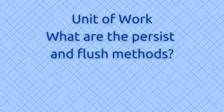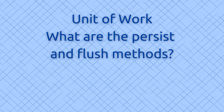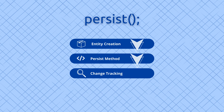Unit of Work and what are the persist and flush methods: Doctrine ORM uses the Unit of Work pattern to efficiently manage the state of entities and their changes. The Entity Manager in Doctrine is built around this pattern, allowing it to track all operations on entities within a single transaction and minimize the number of database queries. The persist method is used to mark an entity as managed, which means Doctrine will track all changes to this entity and prepare it for saving to the database when the flush method is called.